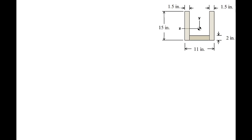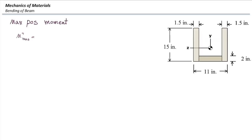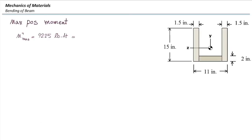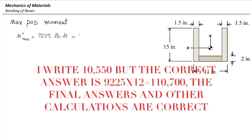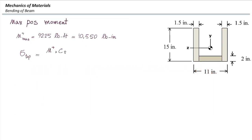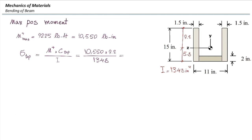The maximum positive moment is 92.25 pound-feet at the middle of AB, and the maximum negative moment is negative 64.50 pound-feet. Pound-feet is not a standard unit, so I need to convert to pound-inches by multiplying by 12, which gives us 10,550. The stress on top of the section is the positive moment multiplied by the distance to the top divided by I. The distance to the bottom is given as 5.8 inches, so the distance to the top is 15 minus 5.8, which is 9.2 inches. I is given as 1348 inches to the fourth. The magnitude of stress in this case would be 756.